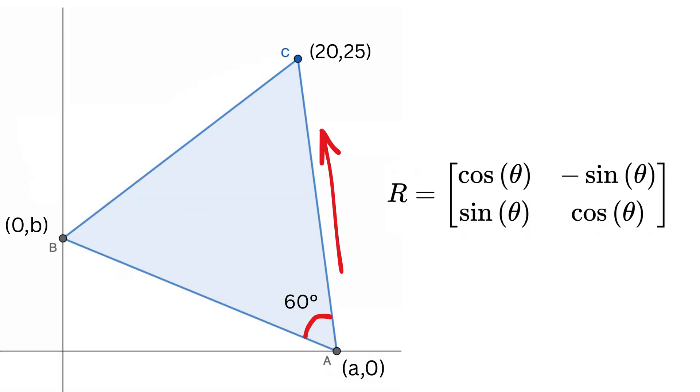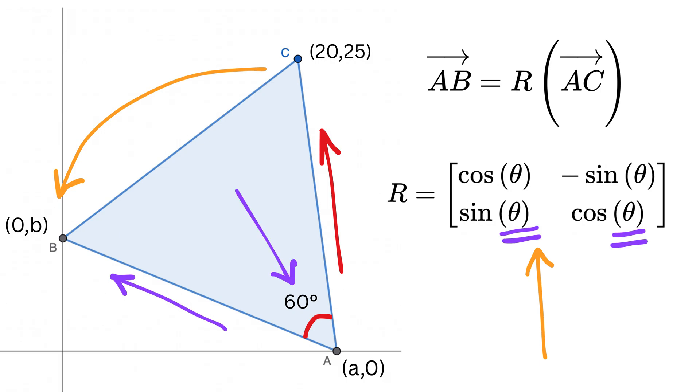So, if we consider AC as a vector and AB also as another vector which is obtained by rotating point C by 60 degrees with respect to point A, then we have AB equals R times AC, where R is called the rotation matrix. This is how we transform one vector to another by multiplying it with a matrix. This rotation matrix looks like this, where theta is the angle through which we rotate the vector, and it is considered positive in counterclockwise direction.